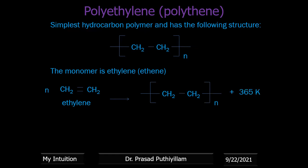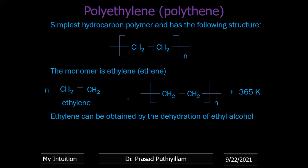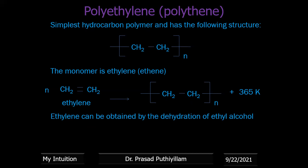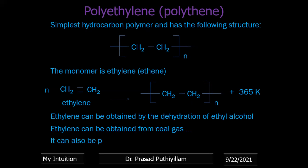The polymerization also releases a large amount of heat — 365 kJ. The monomer ethylene can be obtained by dehydration of ethyl alcohol (CH3CH2OH), which means removal of water, to give CH2=CH2. It can also be obtained from coal gas, as well as from petroleum gases by cracking.